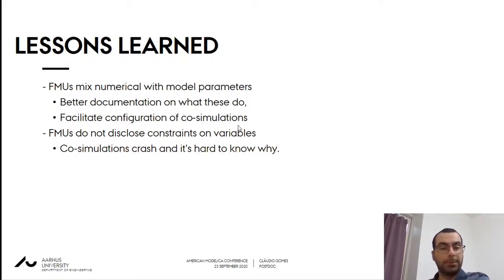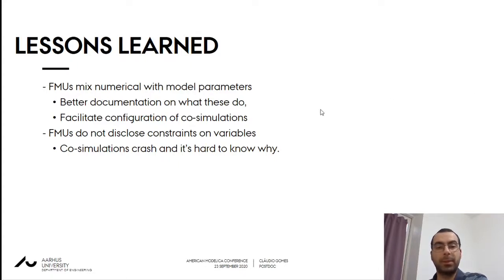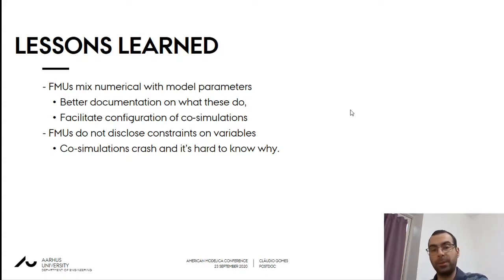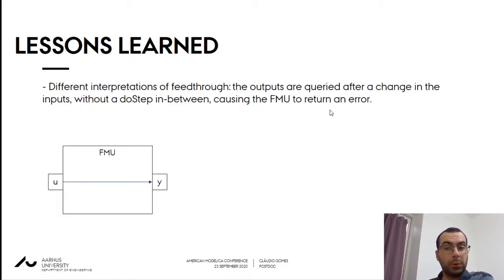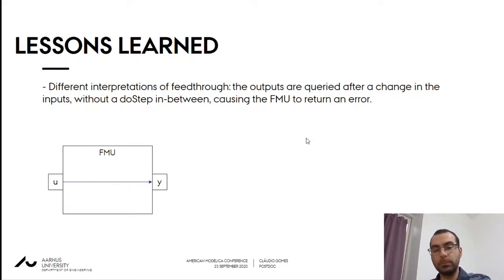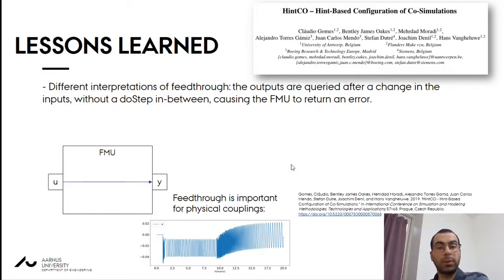What other things have we learned from this work? Some FMUs mix numerical parameters with model parameters — for example, the internal solver or internal step size being used — and these need to be better documented. Other FMUs should disclose what constraints they have on variables, because co-simulations may crash due to an FMU rejecting a value, and it's hard to know why even from the logs. Different FMUs make different interpretations of whether feed-through is supported. Feed-through means we can change an output by sending a different input without a do-step in between, and it's very important for physical couplings. We've shown in past work that the ability to use feed-through can turn a bad co-simulation into a good one.